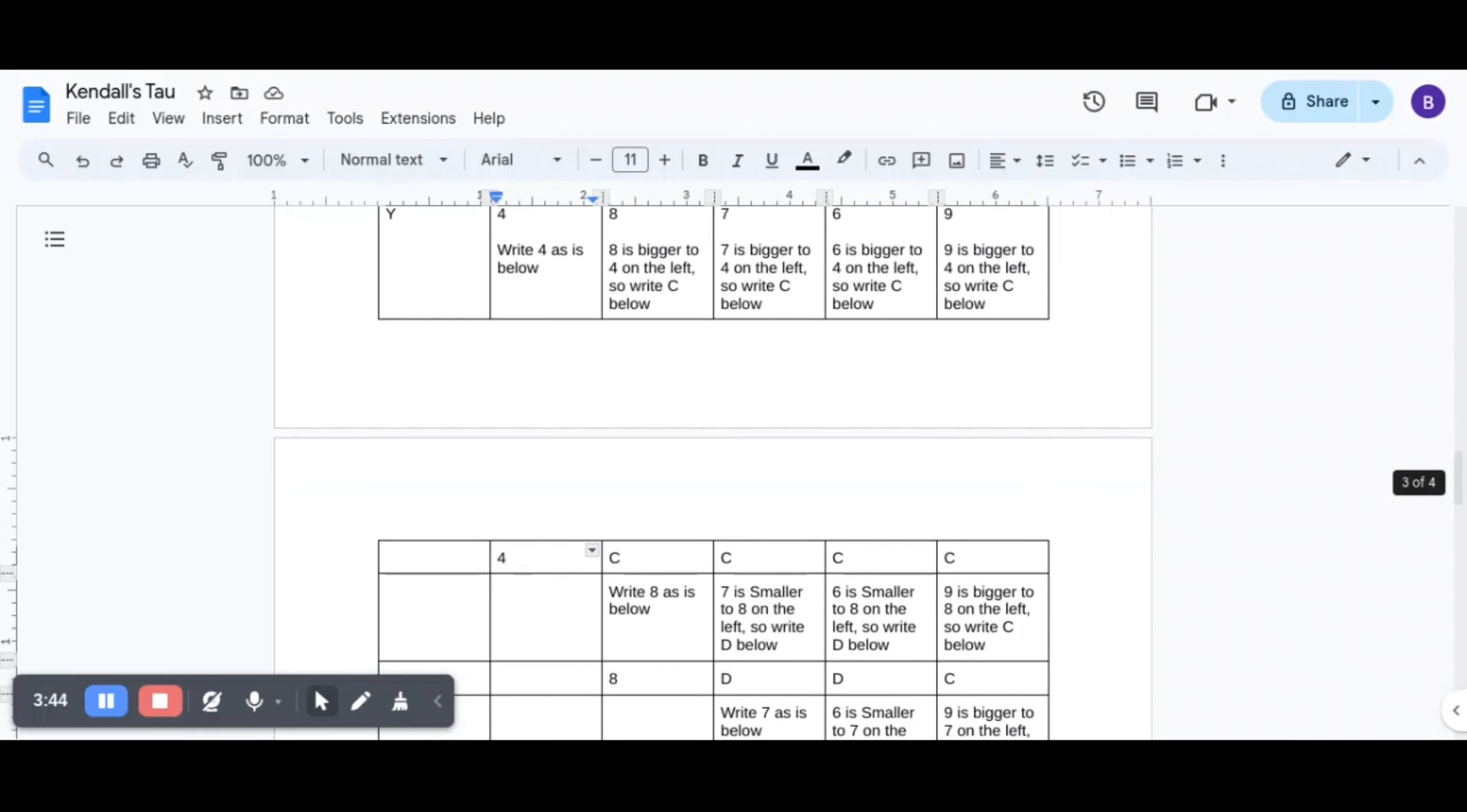Now for the next step we will bring down 8. And then we have to find out if 7 is bigger than 8. No. 7 is smaller than 8. So it will be D.